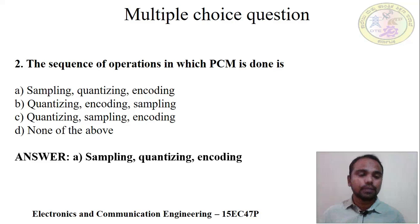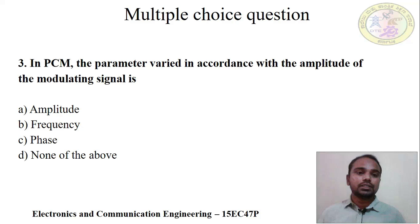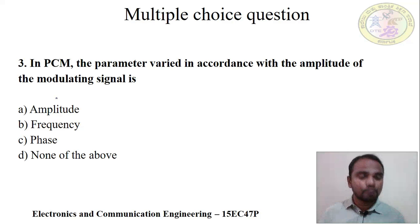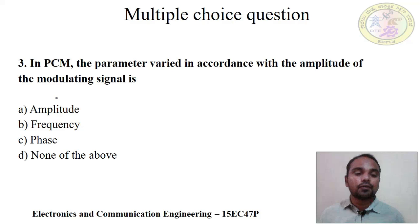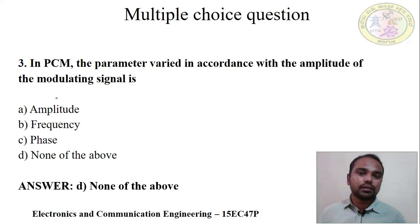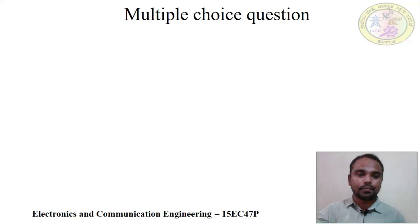Question 3: In PCM, which parameter is varied in accordance with the amplitude of the modulating signal? Options are: A) Amplitude, B) Frequency, C) Phase, D) None of the above. The correct answer is D — none of the above. In PCM, no parameter like amplitude, frequency, or phase varies — instead the amplitude is converted into a binary code.